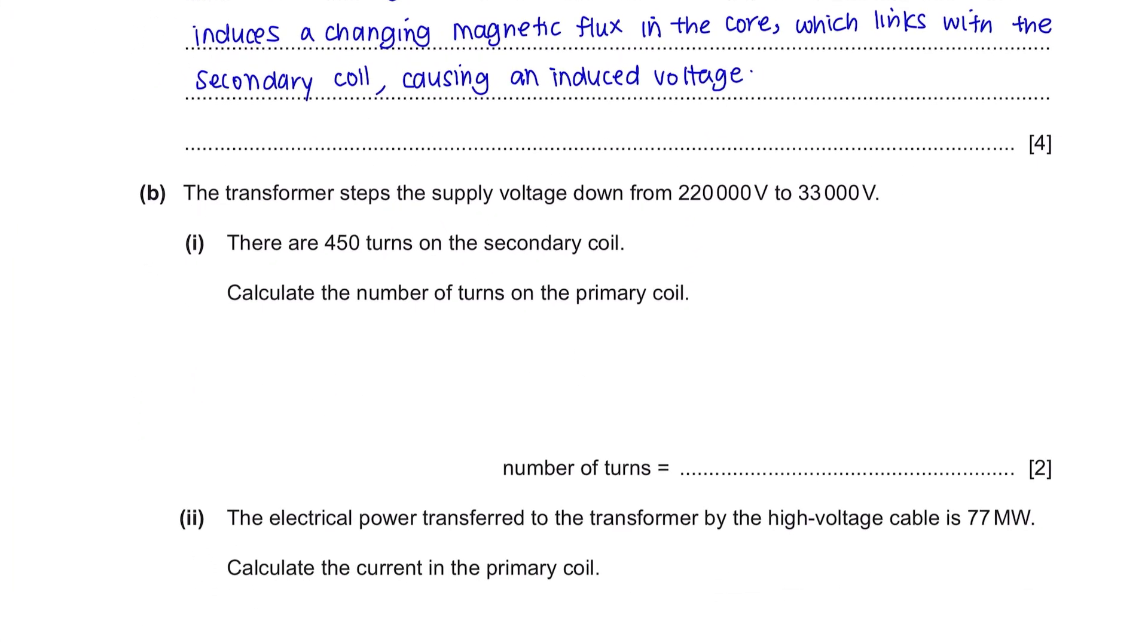Question B. The transformer steps the supply voltage down from 220,000 voltage to 33,000 voltage. This means this is a step down transformer as the voltage moves from a higher number to a smaller number. Part 1: There are 450 turns in the secondary coil and they want you to calculate the number of turns on the primary coil. To calculate the number of turns in the primary coil of the transformer, you can use the turns ratio formula. We are looking for the number of turns in the primary coil. So let's substitute all the values given in the question into our formula. After rearranging and calculating this, you will get a number of turns which equals 3000 turns.